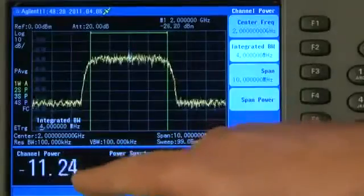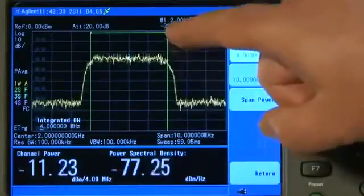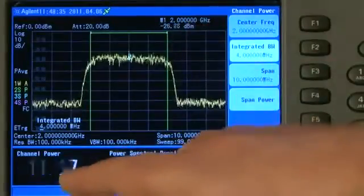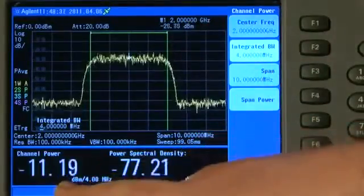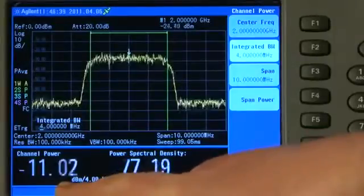And you can see that whereas the single marker is measuring about minus 25 dBm, the actual channel power is much greater than that, it is about minus 11 dBm.